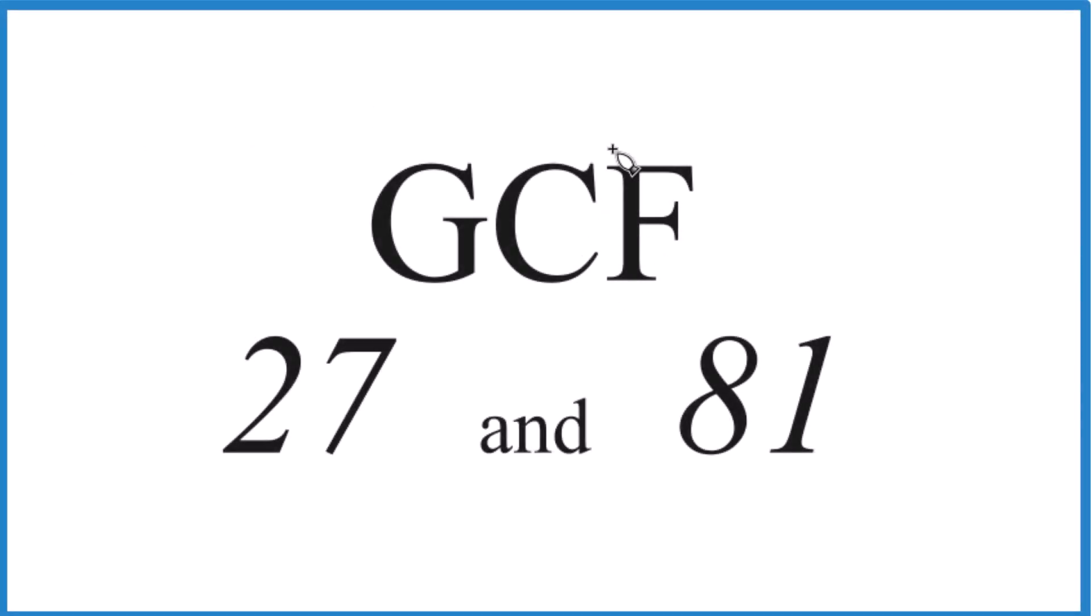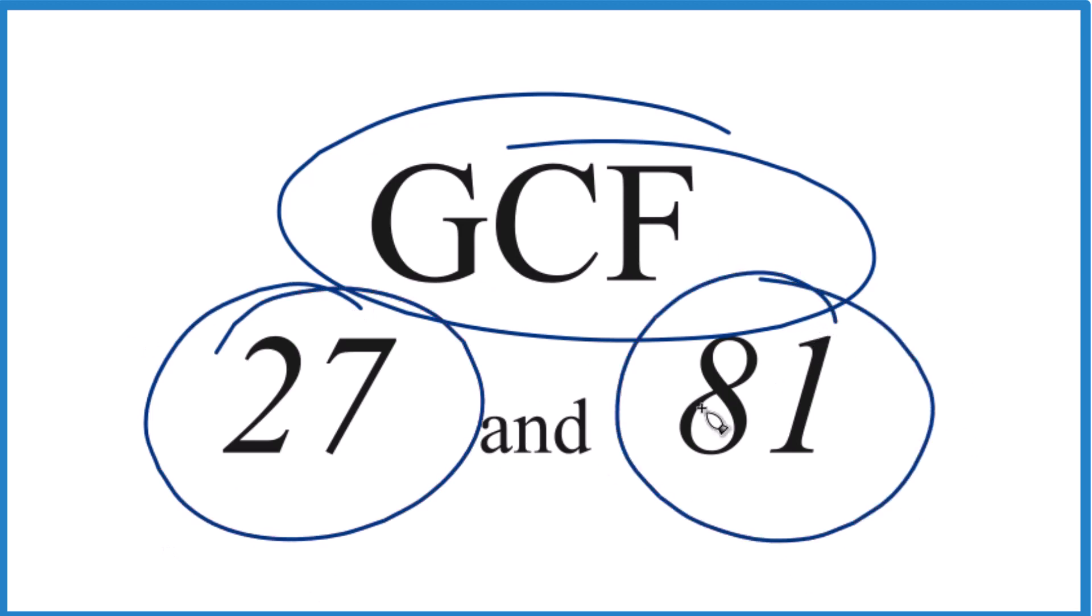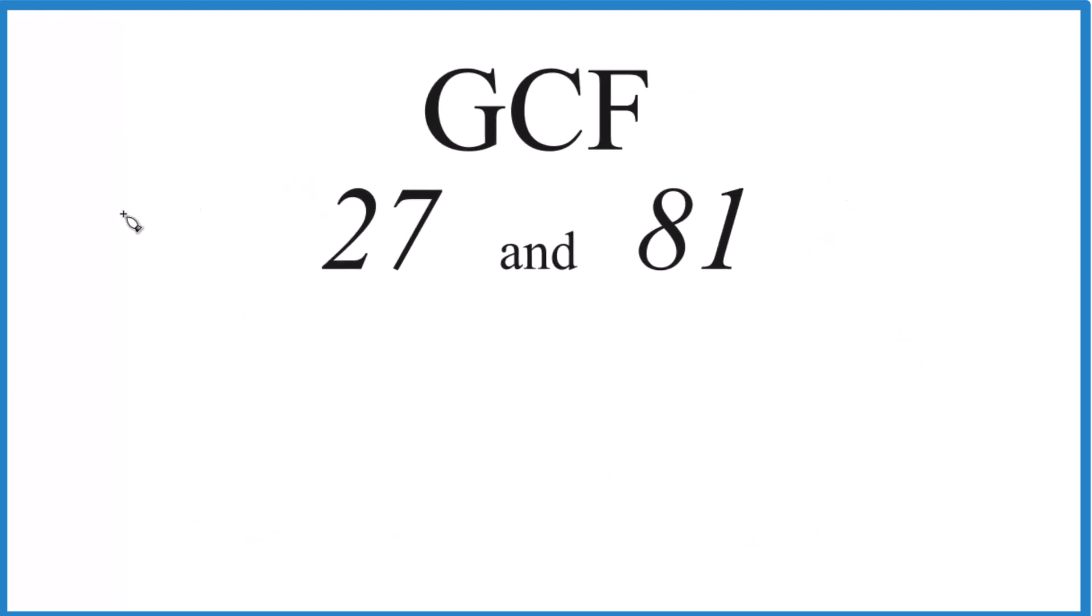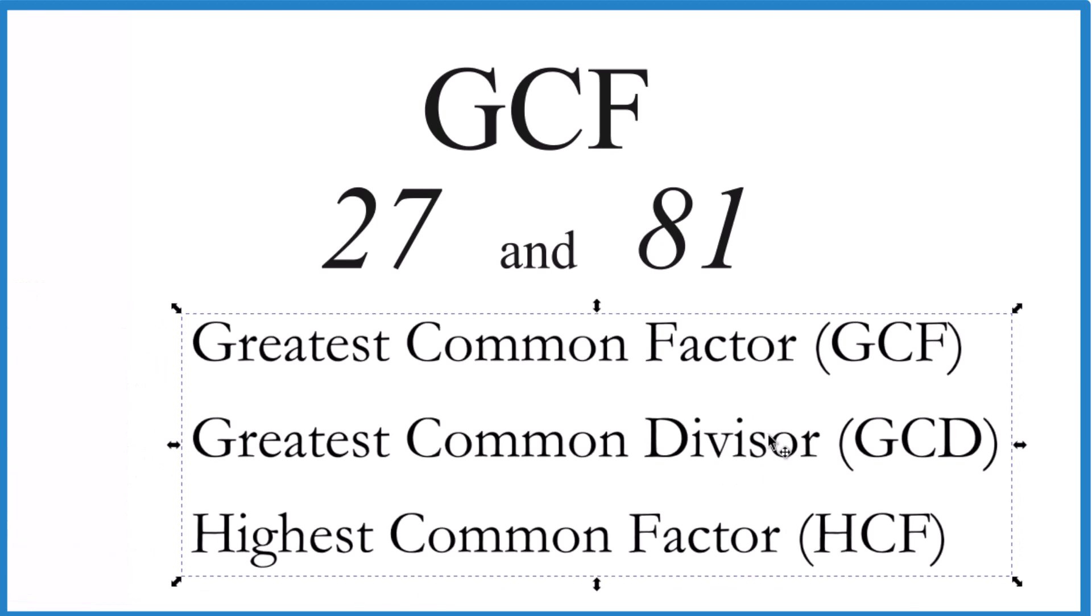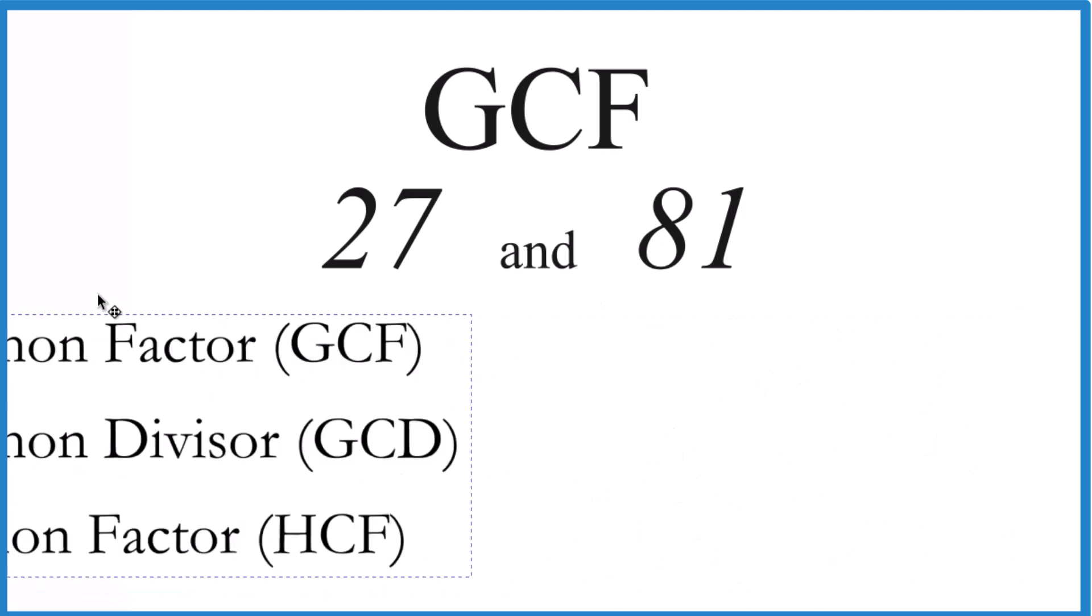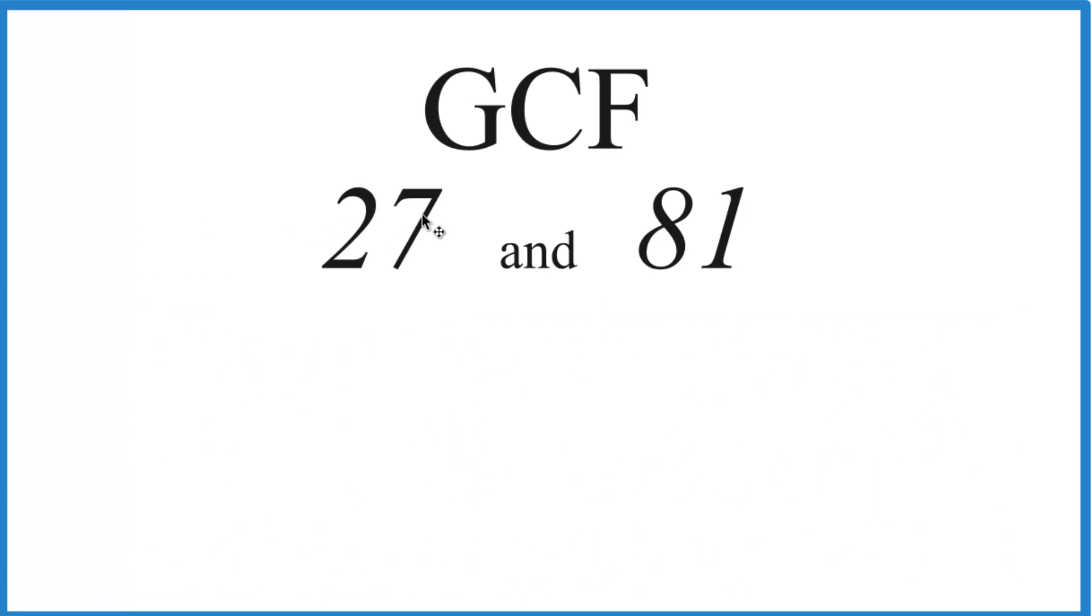Okay, let's do this. We want to find the greatest common factor for 27 and for 81. The greatest common factor, the GCF, is also called the greatest common divisor or the highest common factor. I like greatest common factor. So we find the factors here of 27 and 81, we compare the common factors, and we choose the greatest one.